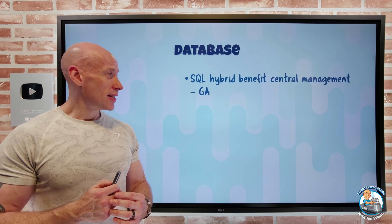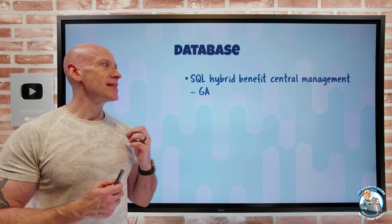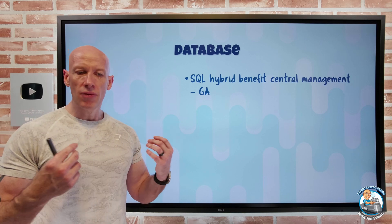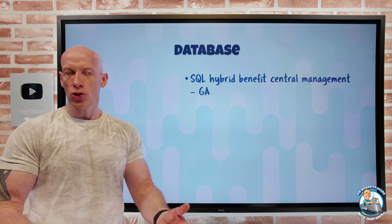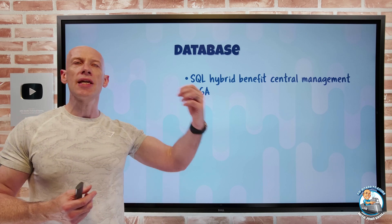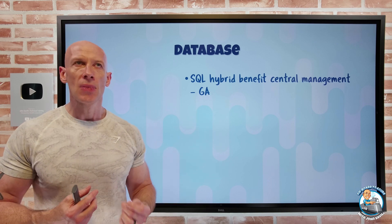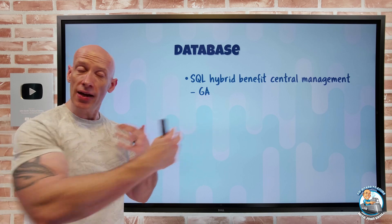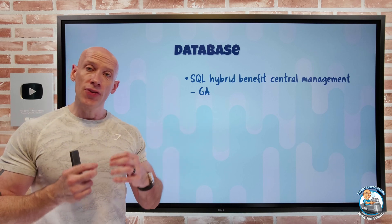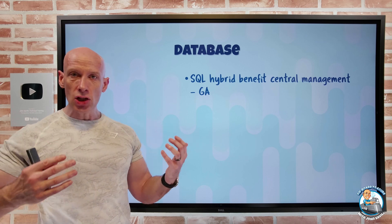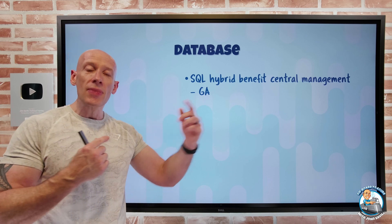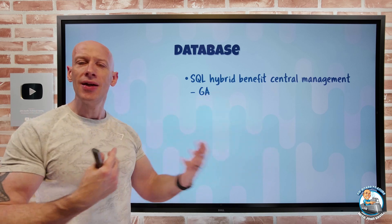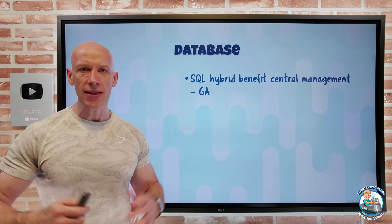On the database side, SQL Hybrid Benefit now has central management, and that's gone GA. I have certain SQL Server licenses I've purchased and want to leverage for SQL running in Azure. From the portal through Cost Management and Billing, I can configure the amount of licenses I have. When I have the SQL IaaS Agent extension for VMs running SQL, it can now track and correlate what's running versus the licenses I have, making it easier to confirm I'm staying in compliance.